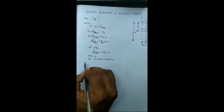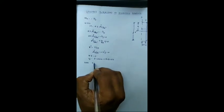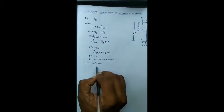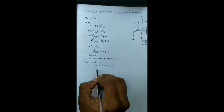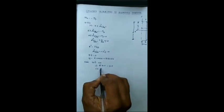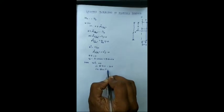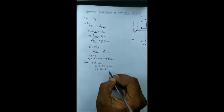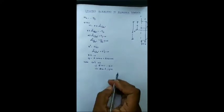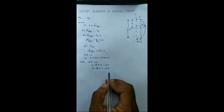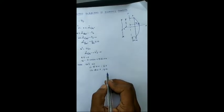So here the boundary conditions are: at x equal to 0, y is equal to e; at x equal to L, again y is equal to e, because both ends are loaded eccentrically.